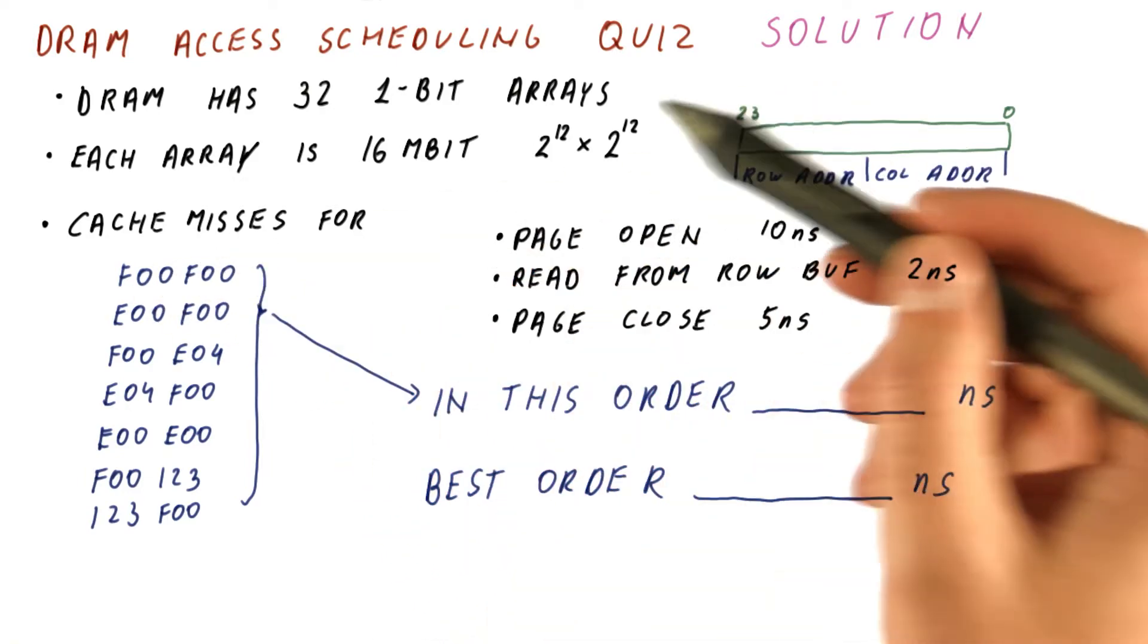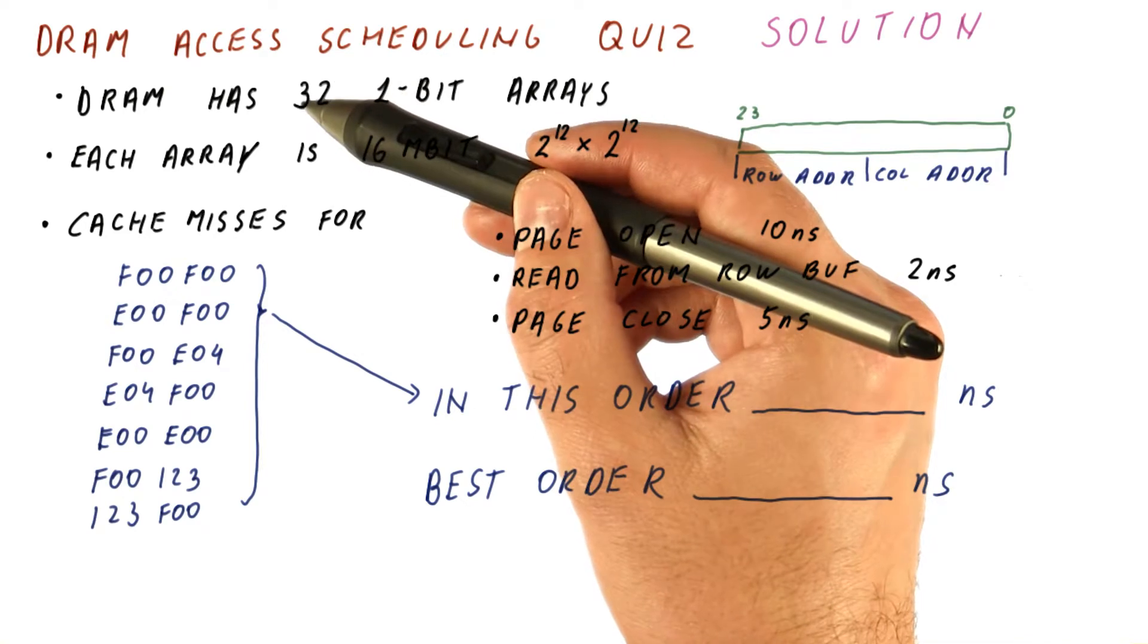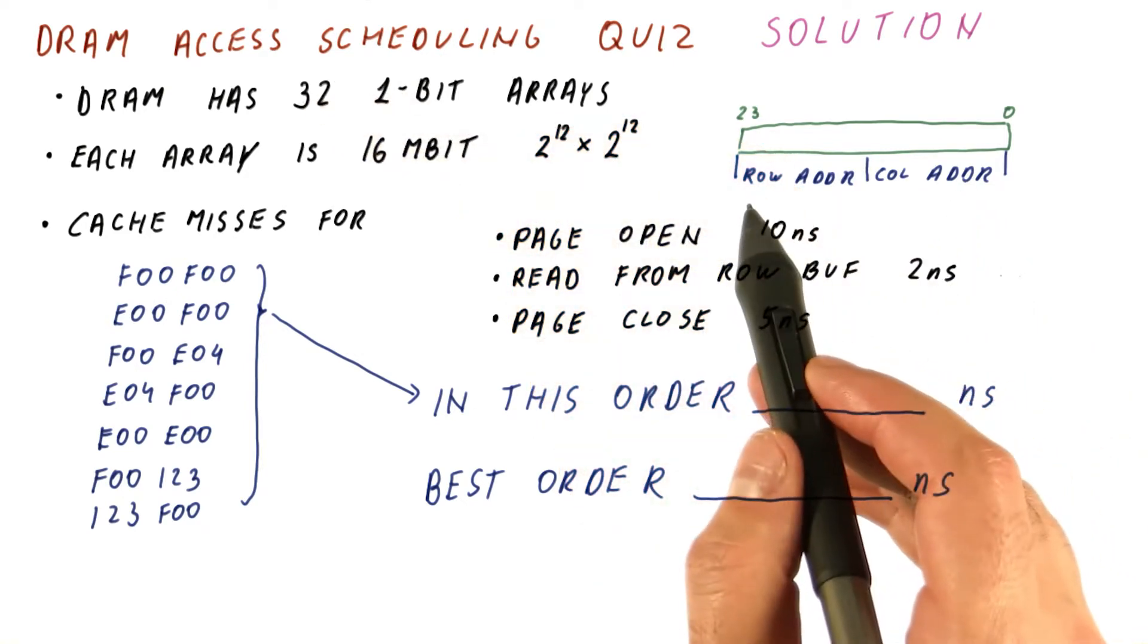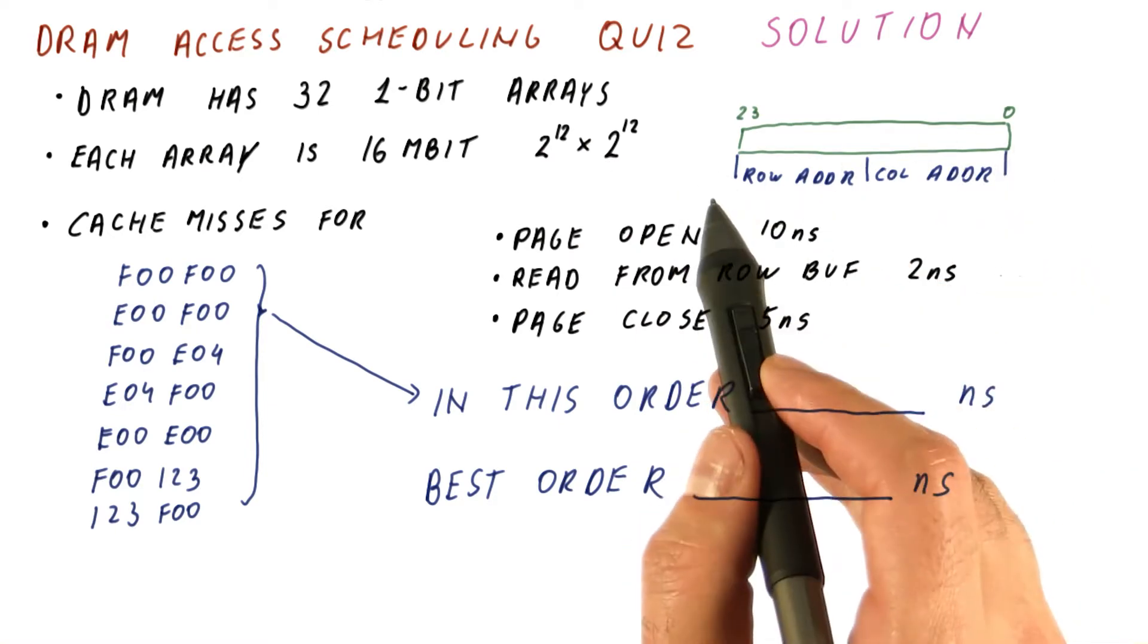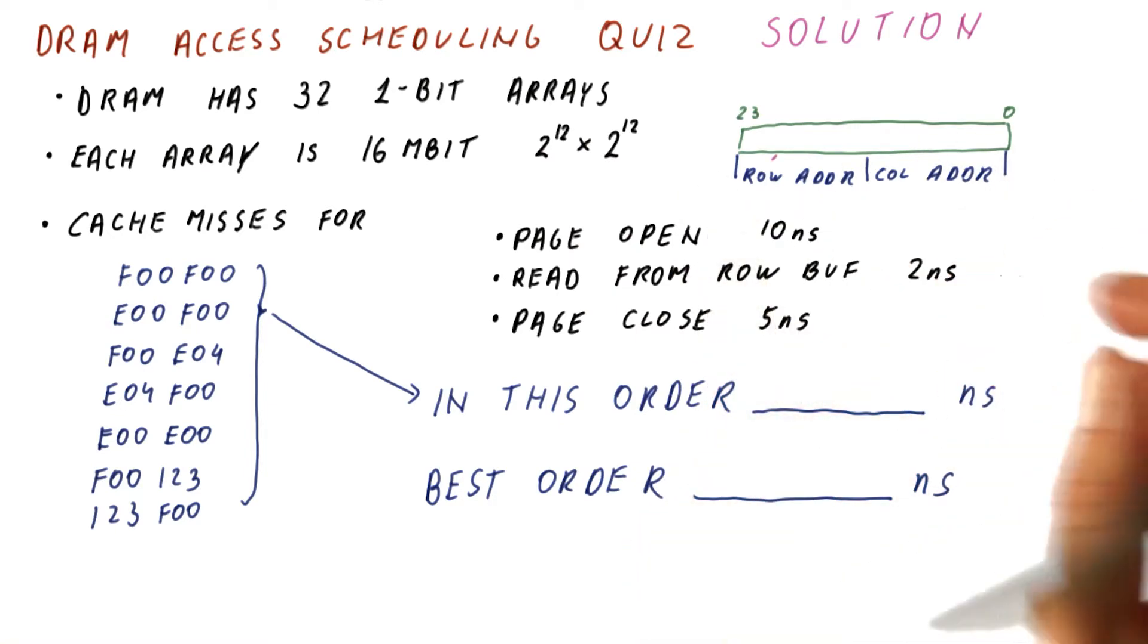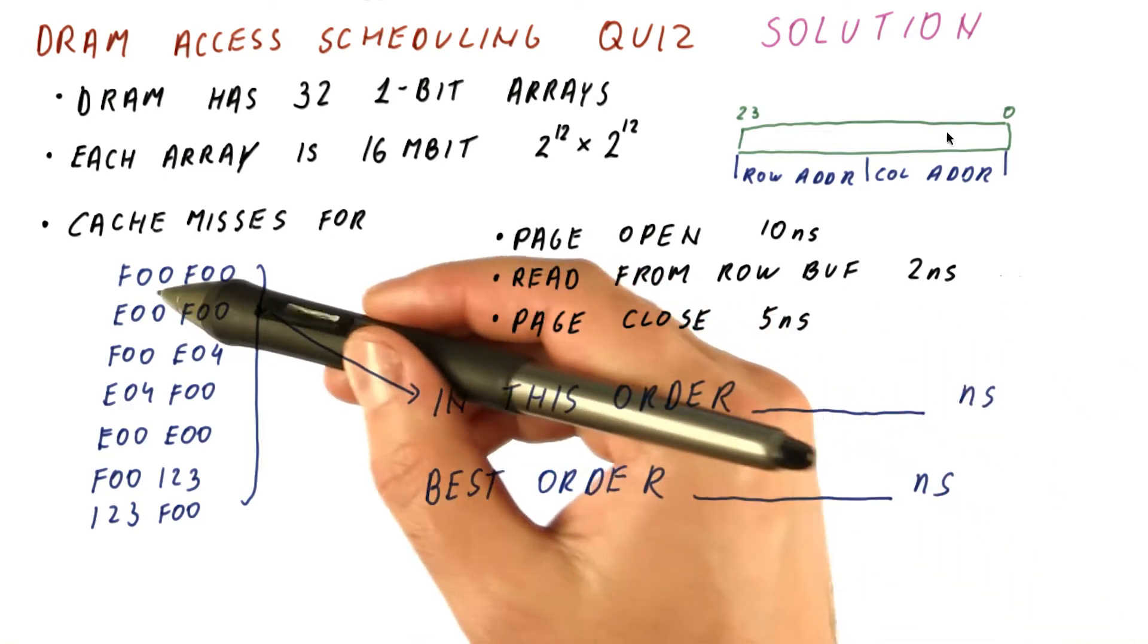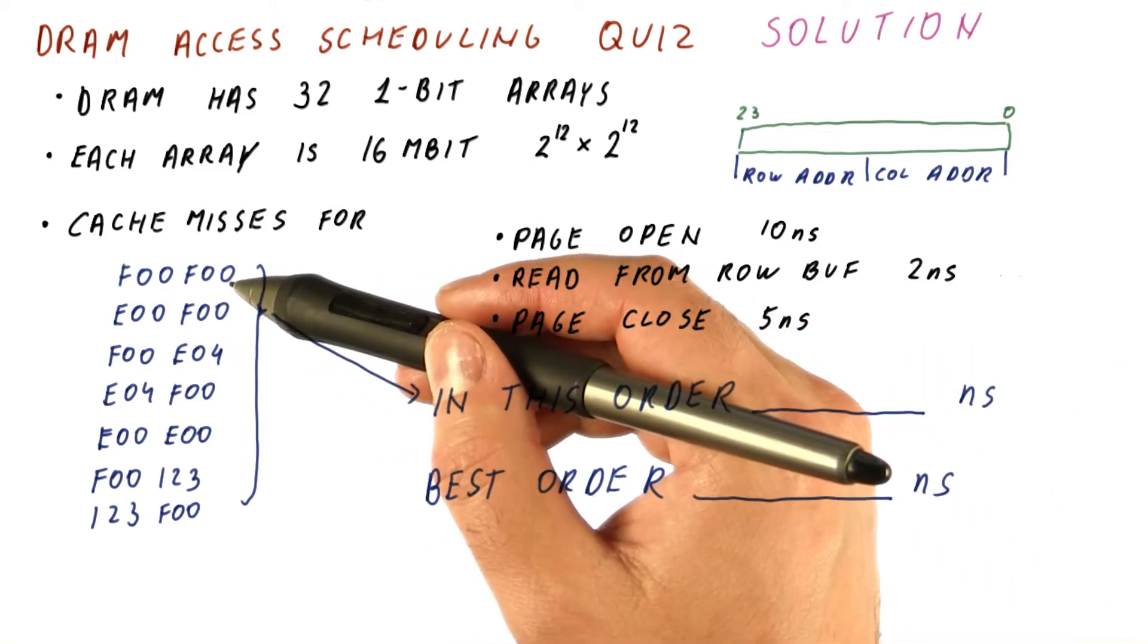Each of these corresponds to a 32-bit memory location. So what happens is each of these arrays sees the same address, but it provides a different bit for that address. So each address will have the same sequence of row and column addresses, it's just that they will implement different bits of that address.